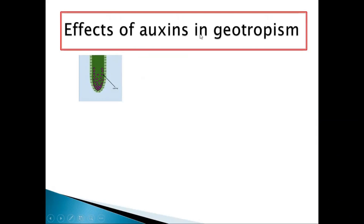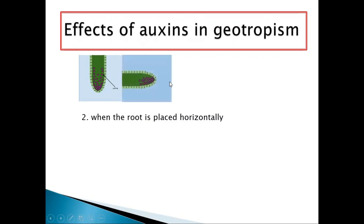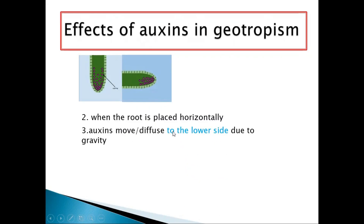What is the effect of auxins on geotropism? Auxins are found at the tip and diffuse upwards evenly. When the root is placed horizontally, auxins move or diffuse to the lower side due to gravity — gravity pulls them downwards. So the upper side will have less auxins and the lower side will have more auxins. But remember, auxins inhibit growth in the case of the root — they slow down growth.